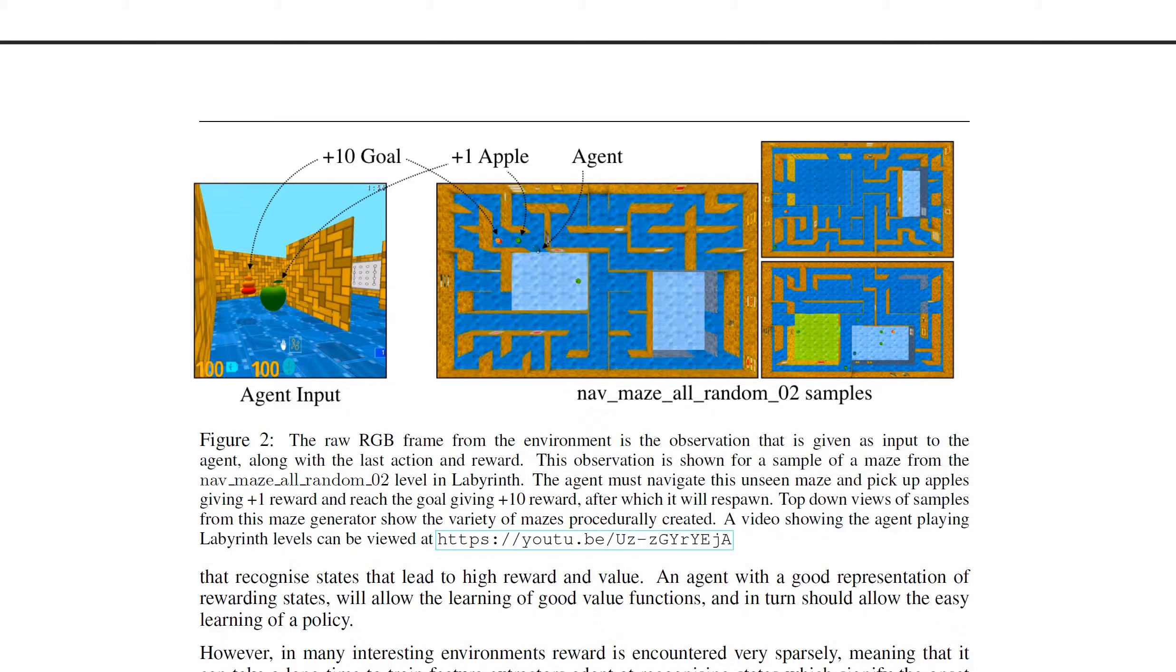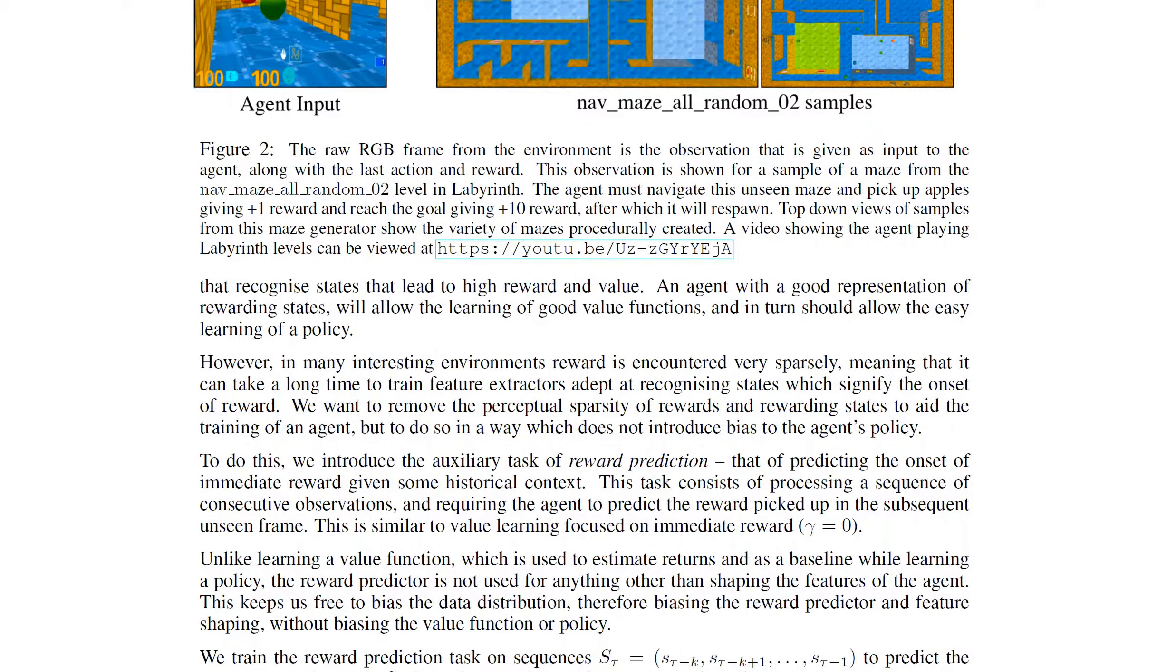On the left you can see what the agent is actually seeing. On the right you can see it from a top-down view. The problem is of course that the reward is very sparse, meaning that you have to navigate a lot of maze before you even get a single point. So reinforcement learning has trouble with this because it relies on constant reward to notice what actions are good and what actions are bad.